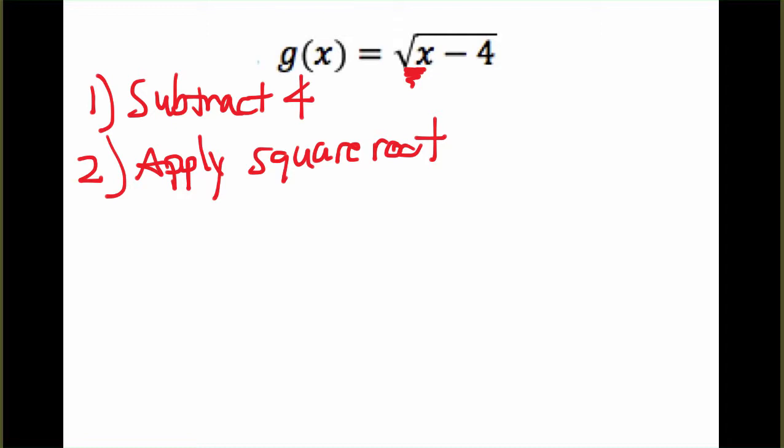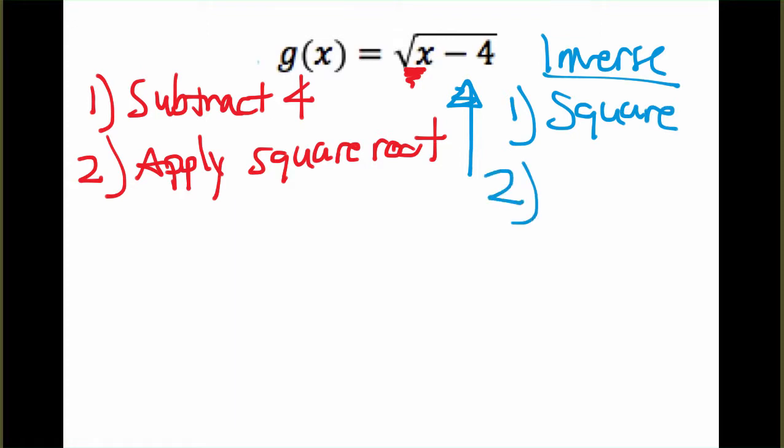Recall, the inverse is the opposite operation in the opposite order. So we start at the bottom and work our way up. The opposite of taking the square root is to square the function. And then as we work up, the opposite of subtracting 4 will be to add 4. So our inverse will be x squared. That's our first thing. And then we add 4.